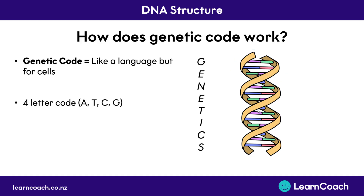Unlike the English alphabet, which has 26 different letters that we can use to make words, the code only has four different pieces of information. It can have an A, a T, a C, or a G, and we'll explain what these are on a later slide. But for now, just know that they're the different types of rung that you can get on a DNA molecule, and they're represented here by purple, blue, red, and green.